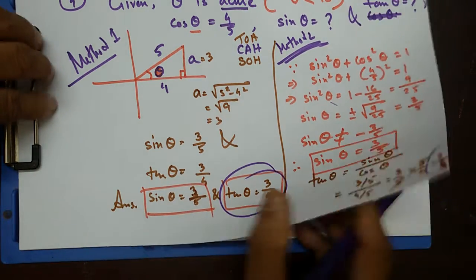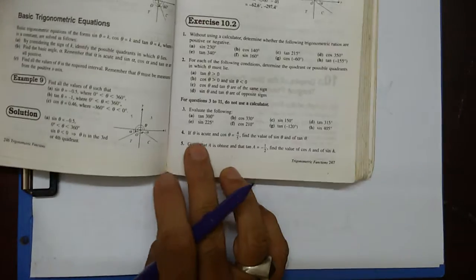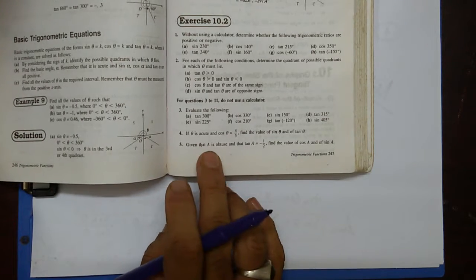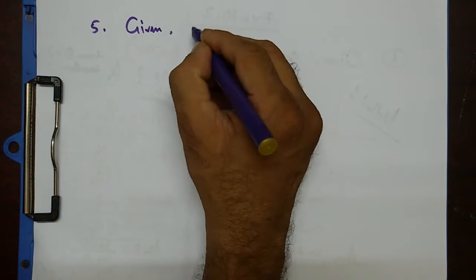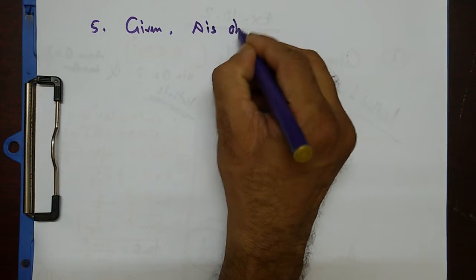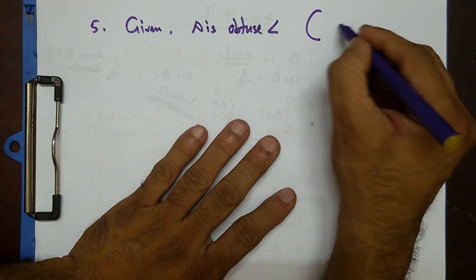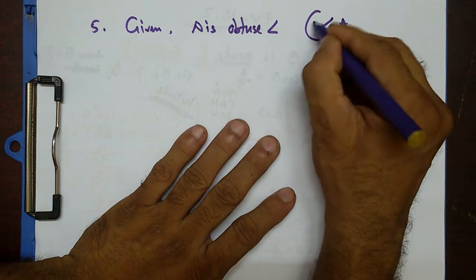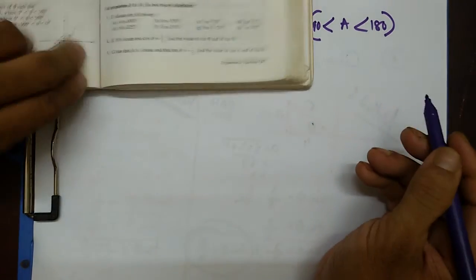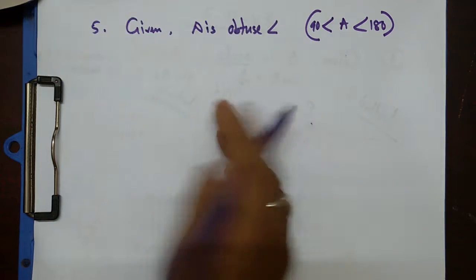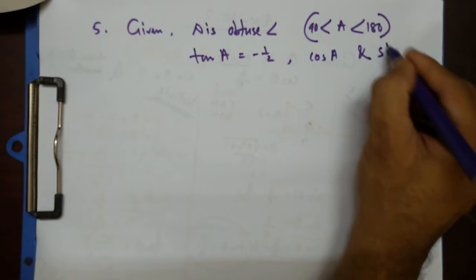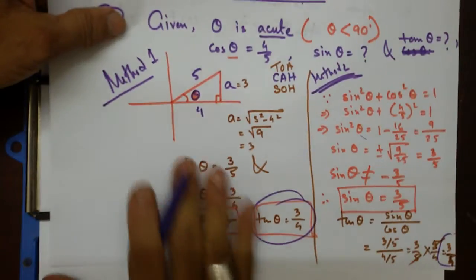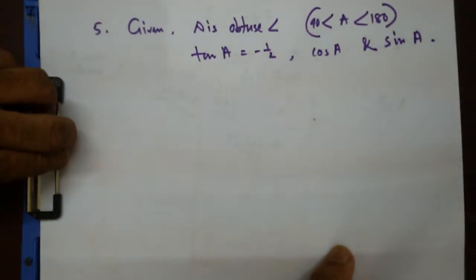That was question number 4 with an acute angle. Now question number 5 involves an obtuse angle. Given: A is an obtuse angle, meaning A is greater than 90 but less than 180 degrees. And tan A equals negative 1 by 2. We need to find the values of cos A and sine A. I'm going to use the diagram method to solve this, though you can also use trigonometric identities.